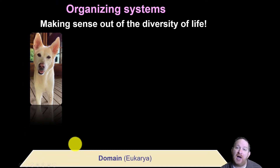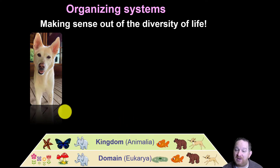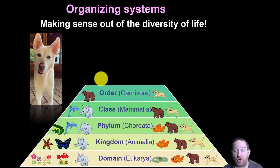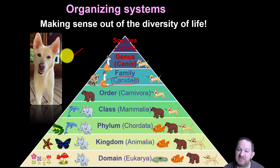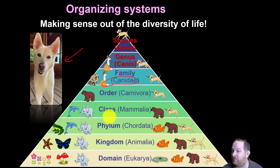Making sense out of it all: if we go through the full system, Gracie is in domain Eukarya — that includes the plants, the mushrooms, all the animals. Kingdom Animalia — she's an animal. Phylum Chordata — she has a hollow dorsal nerve cord. She's also a mammal, gives live birth, has lots of hair. Order Carnivora — meat eater. Family Canidae. And then genus Canis, species lupus: Canis lupus. That's the binomial nomenclature for a dog. Dear King Paul Cried Out For Good Soup — just remember the order.